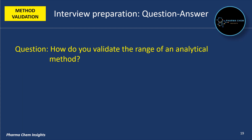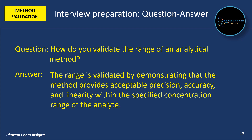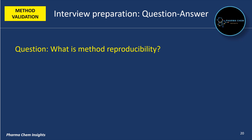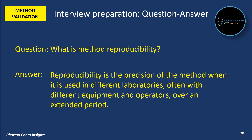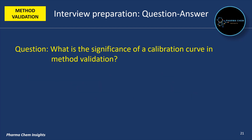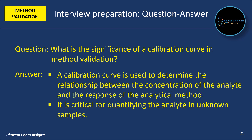Next question: how do you validate the range of an analytical method? The range is validated by demonstrating that the method provides acceptable precision, accuracy and linearity within the specified concentration range of the analyte. What is method reproducibility? Reproducibility is the precision of the method when it is used in different laboratories, often with different equipment and operators, over an extended period. Next question: what is the significance of a calibration curve in method validation? A calibration curve is used to determine the relationship between the concentration of the analyte and the response of the analytical method, and is critical for quantifying the analyte in unknown samples.